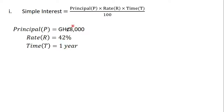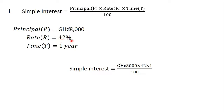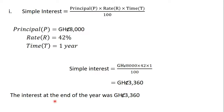We substitute this information into the formula. Simple interest is equal to the principal, which is 8000 Ghana cedis, times the rate, which is 42 — the 100 in the formula shows that 42 is a percentage — times the period of time, which is 1 year. This gives us 3360 Ghana cedis. So the interest on the loan at the end of the year was 3360 Ghana cedis.